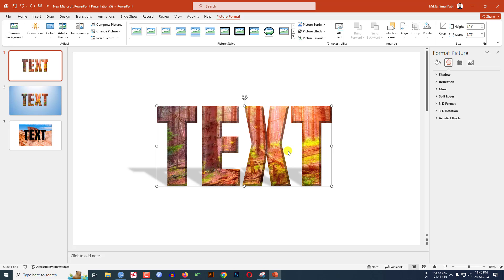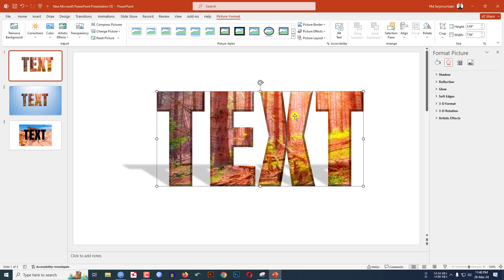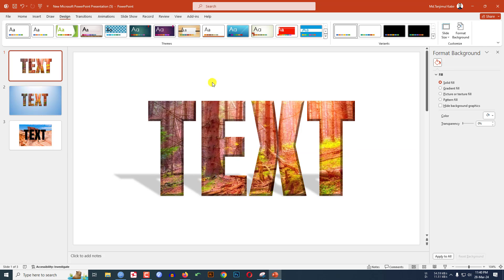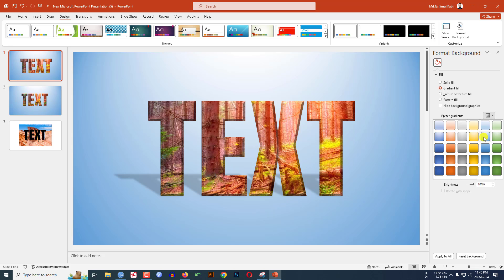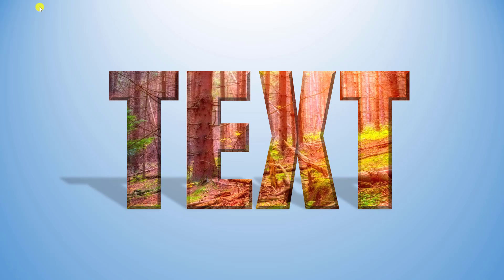If you want to increase the size, just hold down the Shift key and increase the size like this — it will look more beautiful. To add a background, go to Design, go to Format Background, go to Gradient Fill, and choose a fill color. This is looking very beautiful.